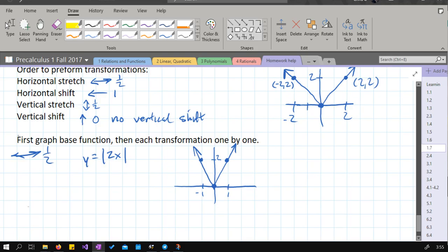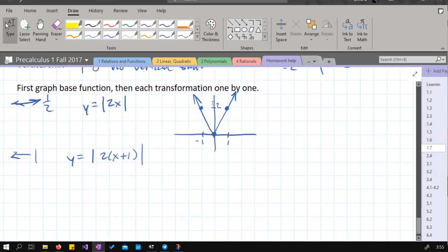Now we're gonna shift left one, y equals absolute value two, x plus one, absolute value. Okay. Now shift left one. You're gonna take your x coordinates and move them left one or subtract one from each. So we have negative two, negative one, and zero.